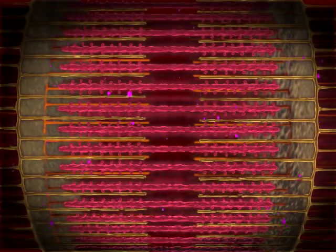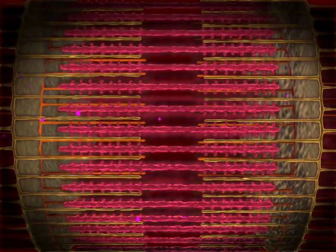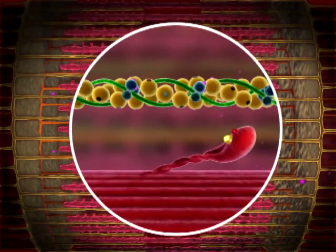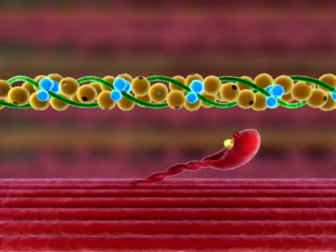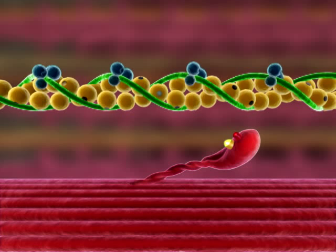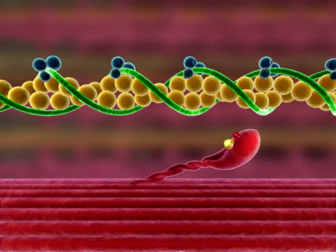Crossbridge cycling ends when calcium ions are actively transported back into the sarcoplasmic reticulum. Troponin returns to its original shape, allowing tropomyosin to glide over and cover the myosin binding site on actin.